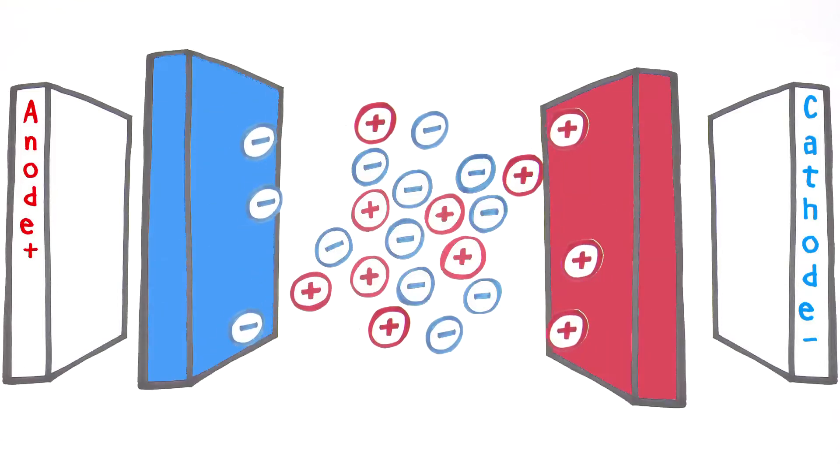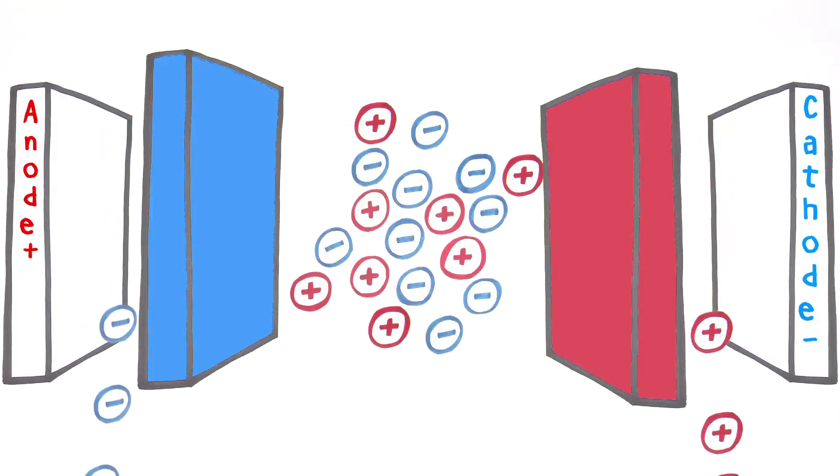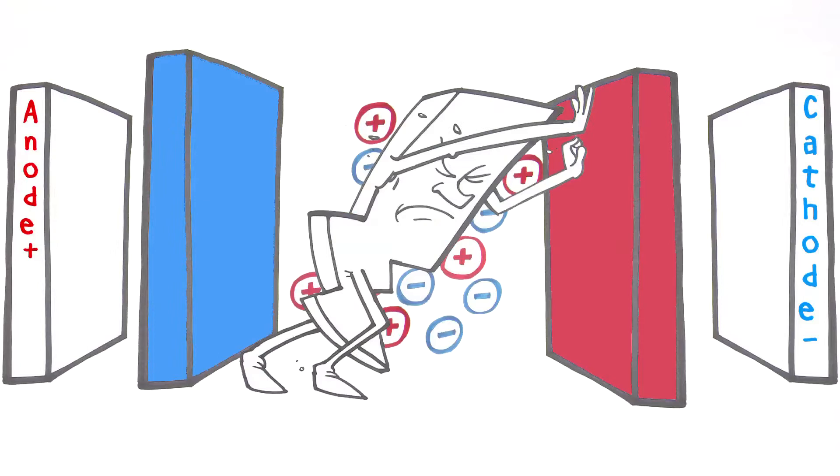Ions can only pass through an oppositely charged membrane, so the alternating cation-selective and anion-selective membranes trap the ions and allow them to be flushed out with a reject stream. This reject stream is then discarded, recycled, or processed further. But low conductivity feed waters inhibit passage of the electric current that transports ions.